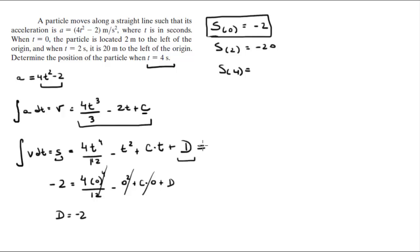Let's rewrite this then: 4t to the 4 over 12 comes out to be t to the 4 over 3, minus t squared, plus c times t, minus 2, because we already found d. And you know that when the time is 2, s is negative 20.